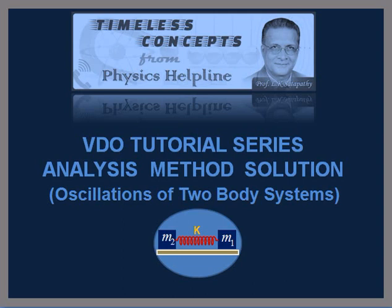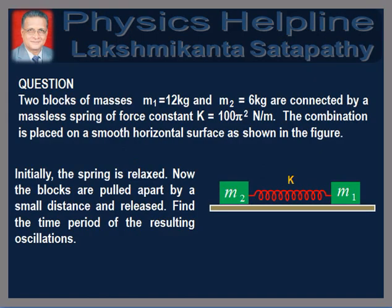In this video tutorial, we will discuss a problem on the oscillations of two-body systems with the help of the concept of reduced mass. Two blocks of masses M1 equal to 12 kg and M2 equal to 6 kg are connected by a massless spring of force constant k equal to 100π² Newton per meter. The combination is placed on a smooth horizontal surface as shown in the figure.